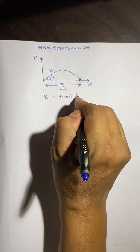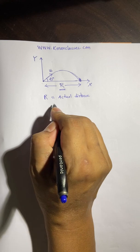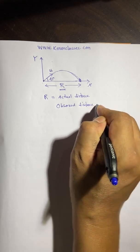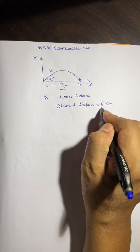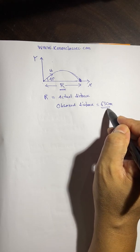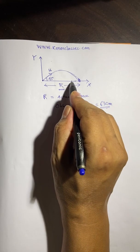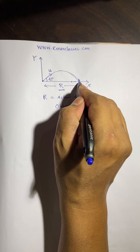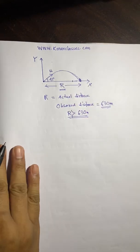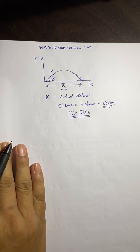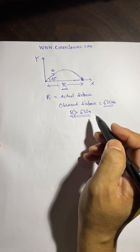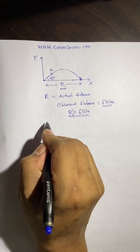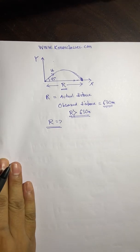The horizontal distance observed is 630 meters. This is the actual distance R, but the observed distance is 630 meters, and this observed distance is less due to air resistance and other resistance. So the observed distance is lesser than R, meaning R is greater than 630 meters. We need to find the percentage decrease due to air resistance. First, we need to find the value of R, the actual horizontal distance covered.